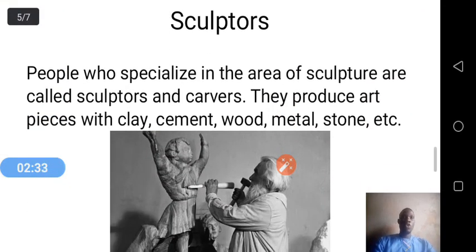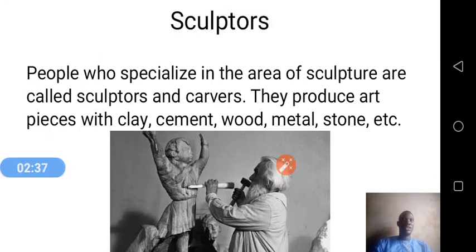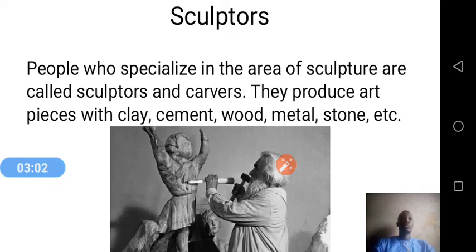We have sculptors. People who specialize in the area of sculpture are called sculptors and carvers. They produce art pieces with clay, with wood, with metal, and with stone using different techniques. They adopt the replacement technique, the addition technique, and the subtractive technique in the production of sculptural pieces.